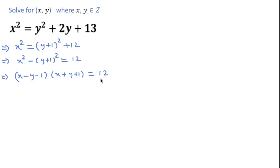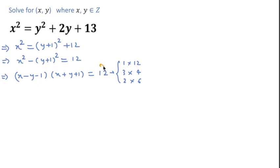The product of these two expressions is 12. We can write 12 as 1 × 12, or 3 × 4, or 2 × 6. These are the possible factor pairs. But we cannot directly assign these pairs because 12 is even — even × even is even and odd × even is also even — so we cannot directly put these pairs here.